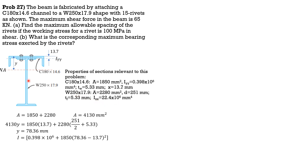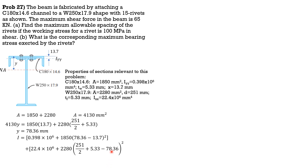For the wide flange: I_x = 22.4 × 10⁶, plus area 2280 times the distance of the centroid of the wide flange to the neutral axis squared — that distance is (251/2 + 5.33 − y), i.e., (251/2 + 5.33 − 78.36). Combining all terms, the moment of inertia of the composite section is 36.81 × 10⁶ mm⁴.